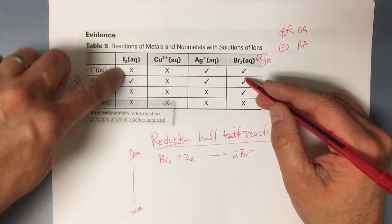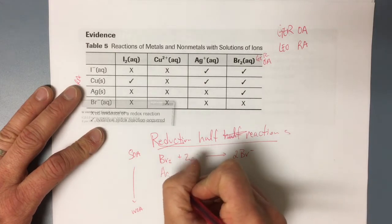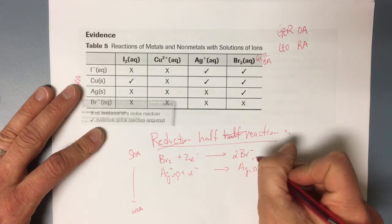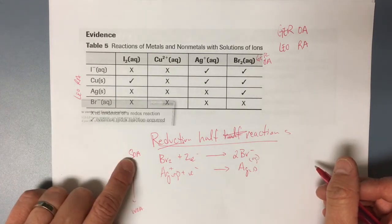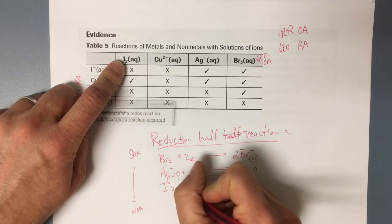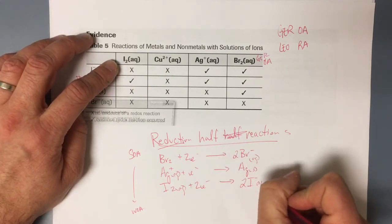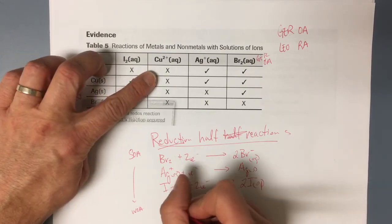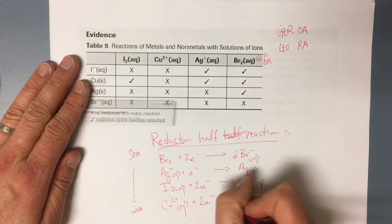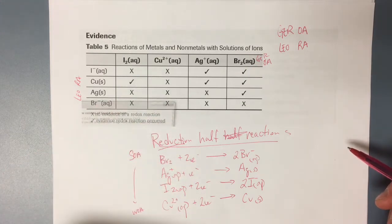Silver reacted with two chemicals, and iodine reacted with one, and copper(II) didn't react with any. So my next most reactive chemical is silver: silver ion plus an electron makes silver solid — that's my second strongest oxidizing agent. Iodine is my next strongest: iodine plus two electrons makes two iodide ions. Finally, copper(II) is my weakest oxidizing agent in this reaction scenario, listed at the bottom.